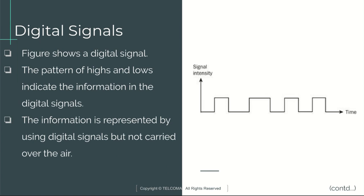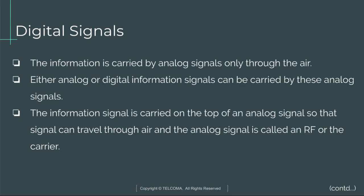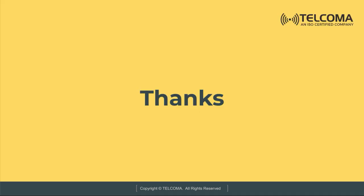This figure shows a digital signal. The pattern of highs and lows indicates the information in digital signals. The information is represented using digital signals but not carried over the air. The information is carried by analog signals only through the air. Either analog or digital information signals can be carried by these analog signals. The information signal is carried on top of an analog signal so it can travel through the air, and that analog signal is called an RF or carrier signal.